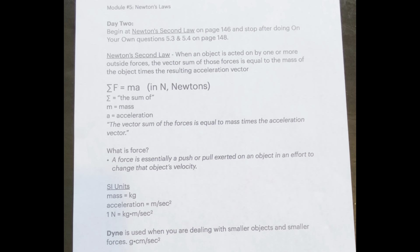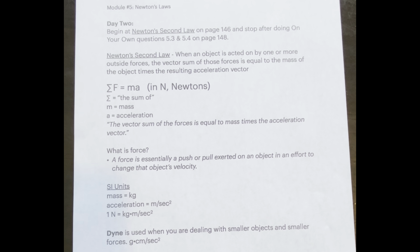Any acceleration that occurs as a result of a force must be in the same direction as the force. So now we know about force: it is a vector quantity whose magnitude is usually measured in Newtons. When a force is applied to an object, that object will experience an acceleration in the same direction as the applied force. The magnitude of the acceleration depends on both the magnitude of the force and the mass of the object. Massive objects take a lot of force to achieve even a little acceleration, while objects with little mass need only a little force to achieve a large acceleration.